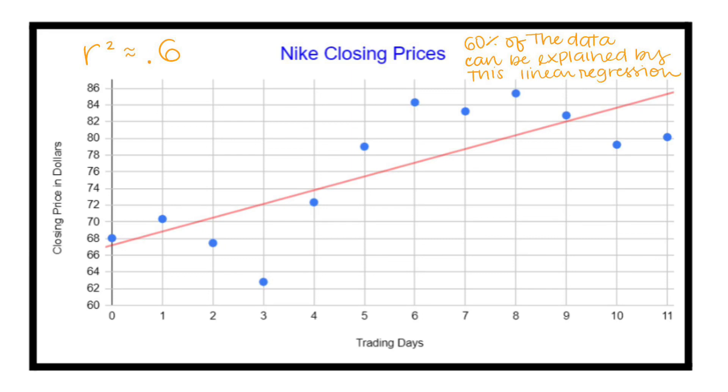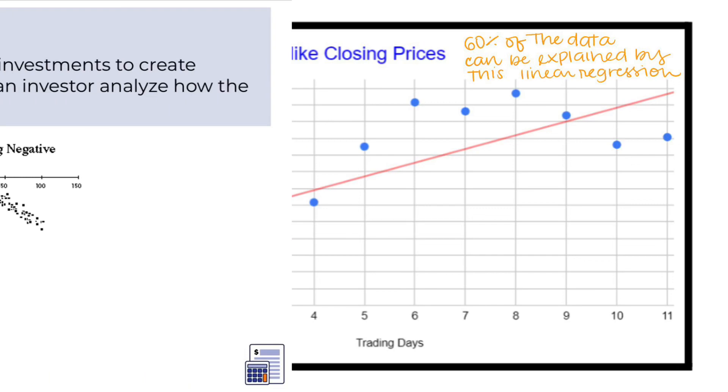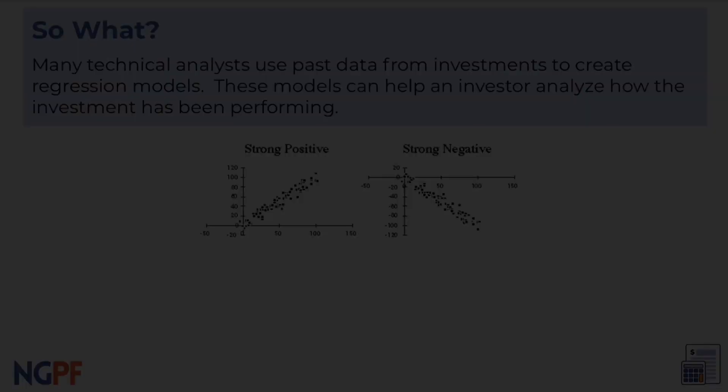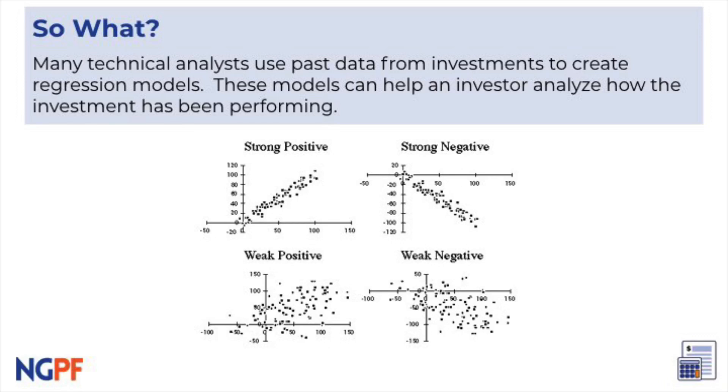That means that this model is a pretty good indication of the data, but still is not near perfect. So what does this mean? As mentioned earlier, many technical analysts use regression models to see how a company's stock has been performing. If you get an R-squared value that is close to 1, your data can probably be strongly explained by the trend line. However, if you get an R-squared value that is closer to 0, your regression model might not be able to explain the relationship as well.